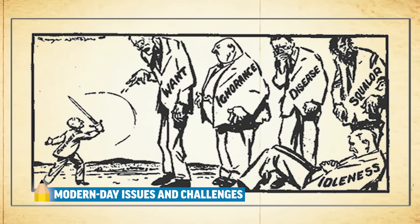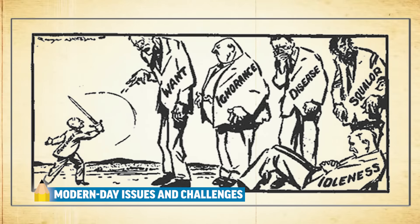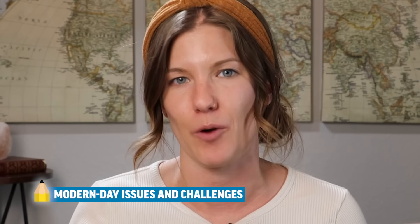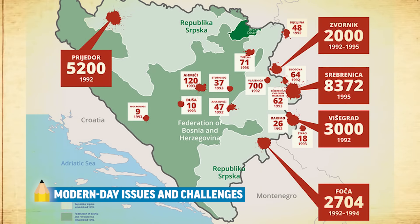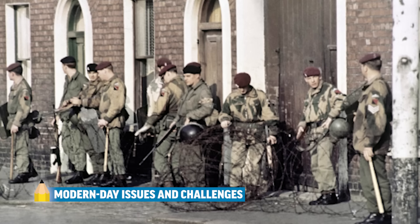Western European countries increasingly adopt interventionist social welfare policies after World War II to alleviate economic burdens faced by citizens. But over time, these cradle-to-grave social welfare programs are met with increasing criticism. Nationalism continues to rise as groups fight for independence or more rights, both within the former Soviet bloc — like the Bosnian Genocide — and in the West, like the IRA in Ireland. Outside of Europe, former colonies fight for independence against their colonizers in a movement known as decolonization.